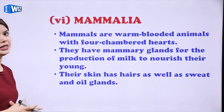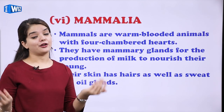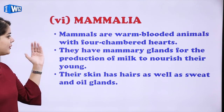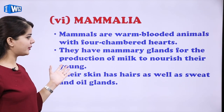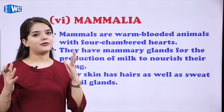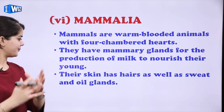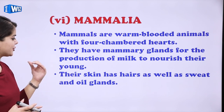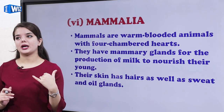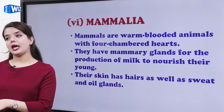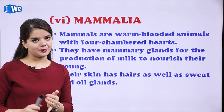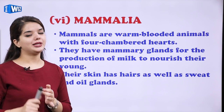Then we have Mammalia — the group in which we humans belong. These are warm-blooded animals with four-chambered hearts. They have mammary glands for the production of milk to nourish their young ones. Their skin has hair as well as sweat and oil glands. They feed their young ones with milk.